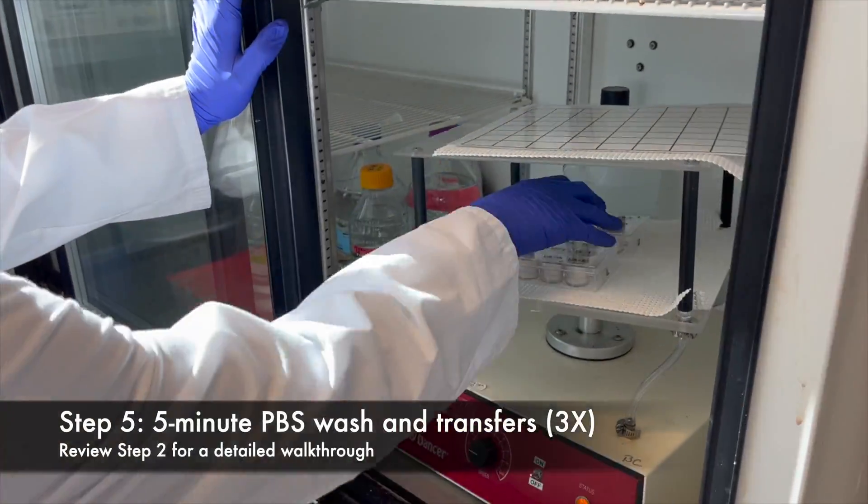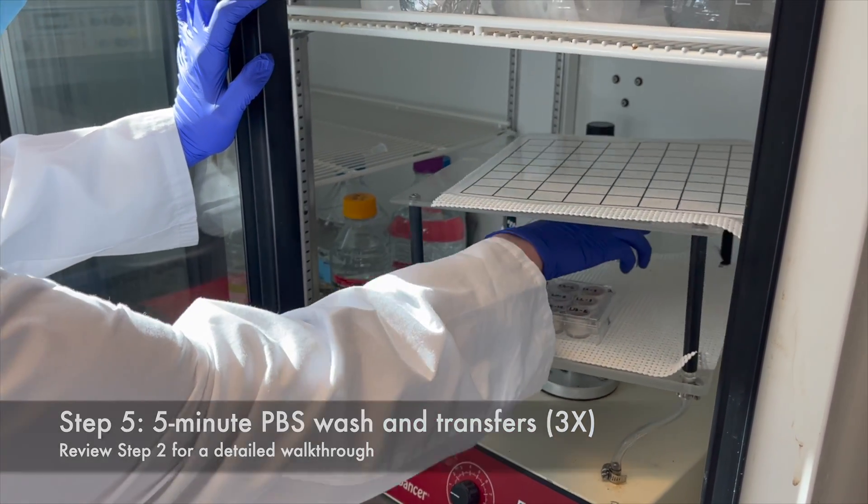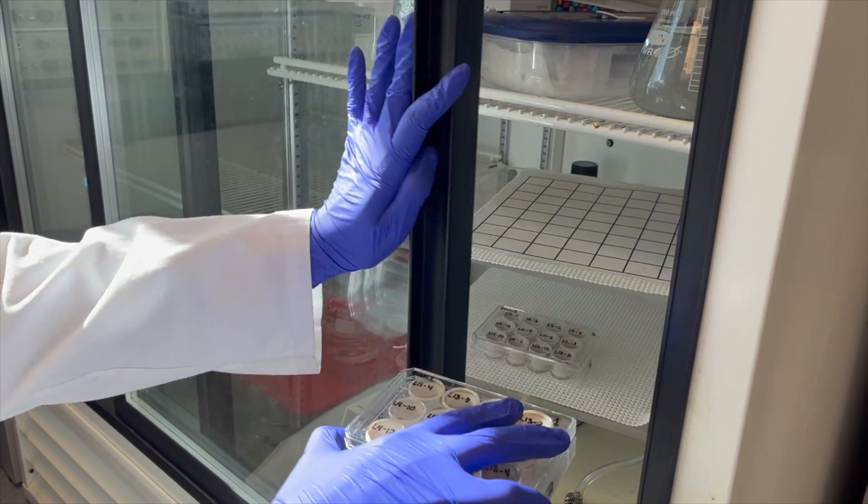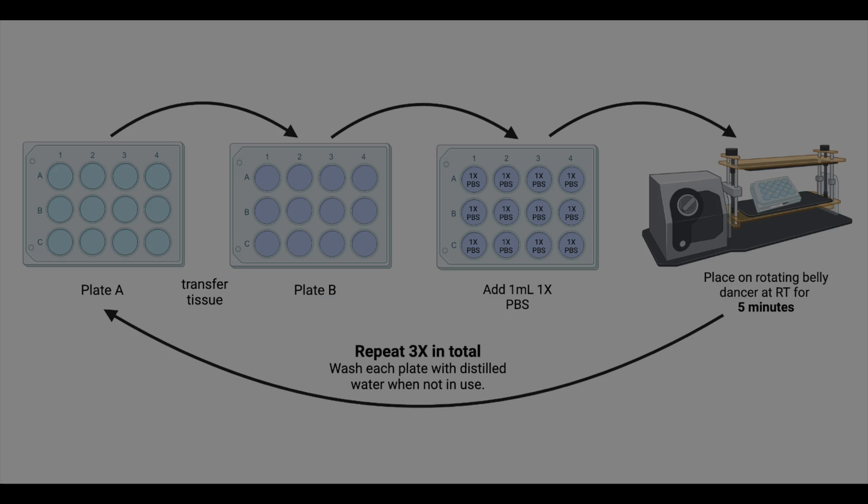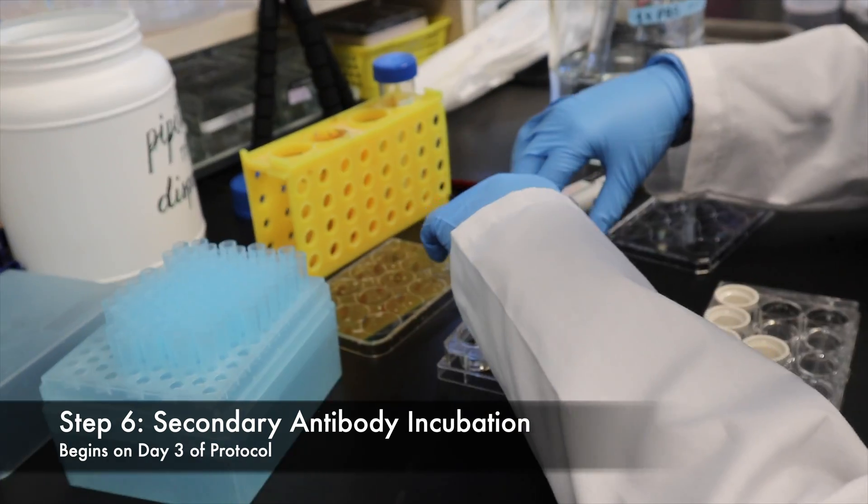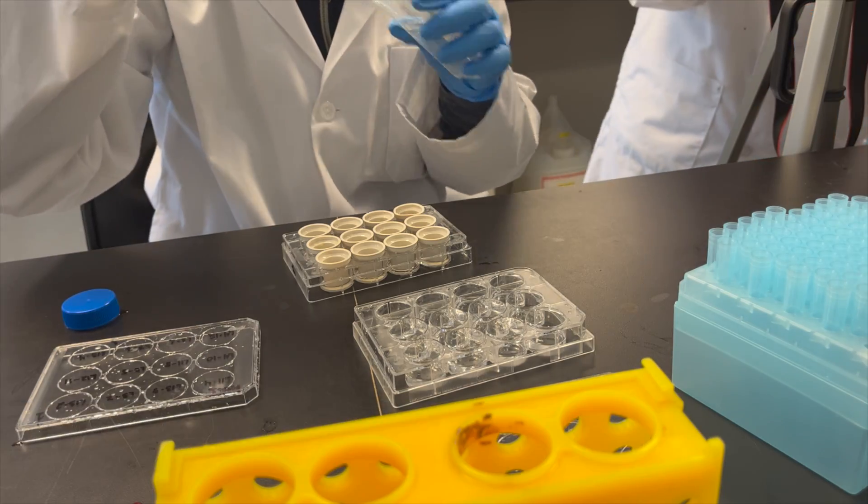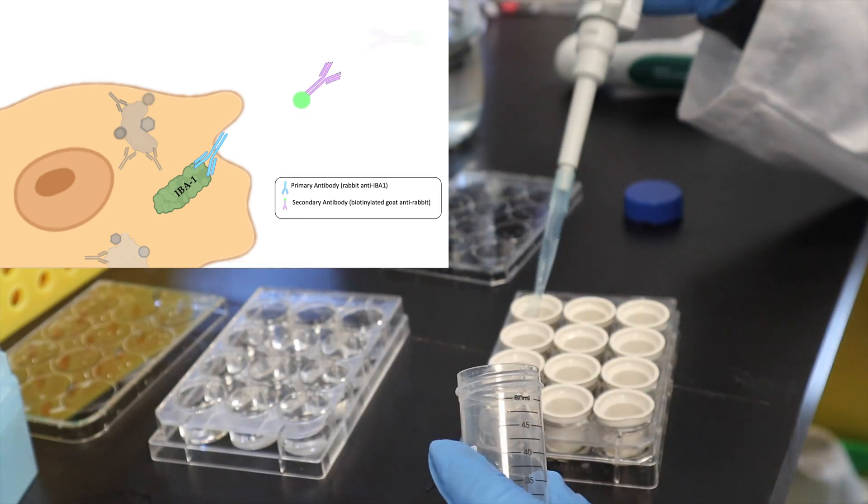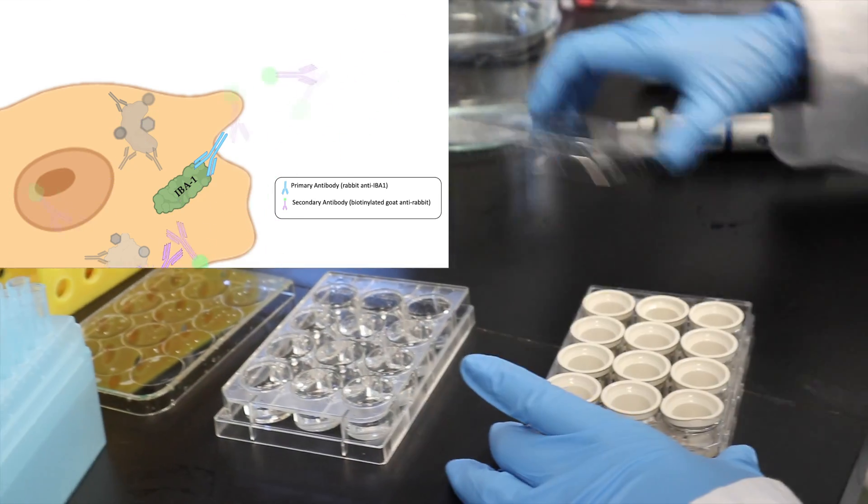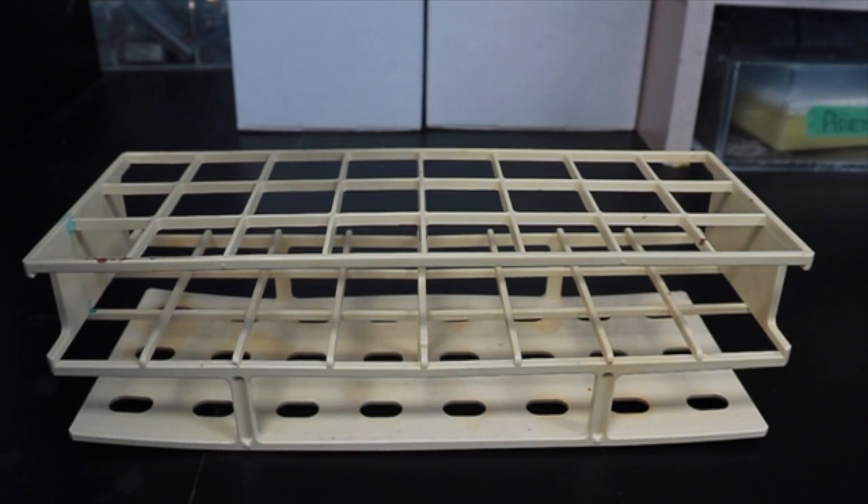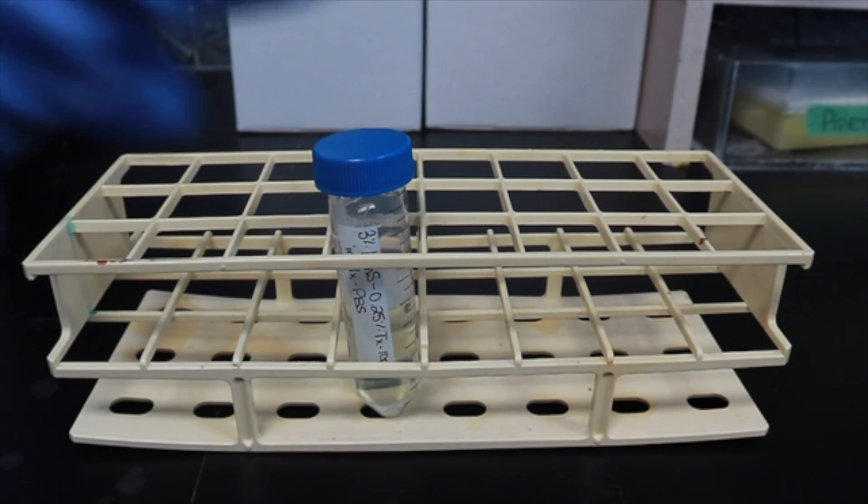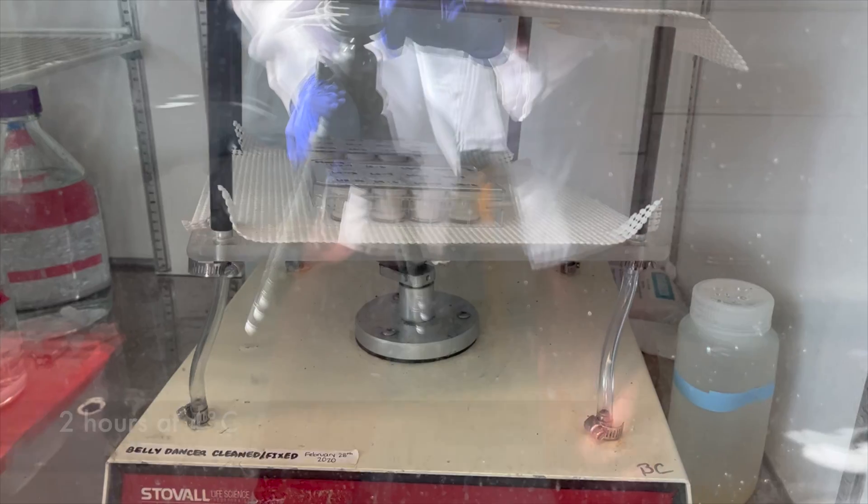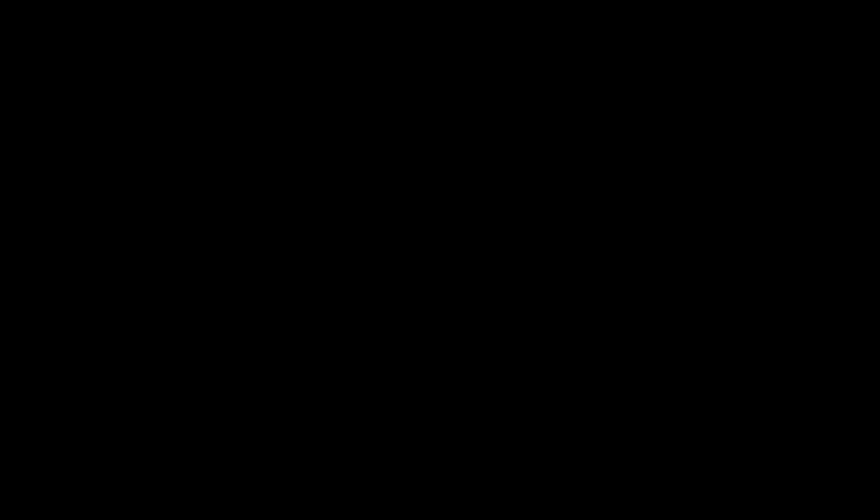To kickstart day 3 of protocol, retrieve your tissue from its primary incubation and perform 3 more 5-minute PBS wash steps as detailed in step 2 of this video or as summarized above. After completing the PBS washes, transfer tissue to a new plate and add approximately 1 milliliter of secondary antibody solution to each well. To make the secondary solution, you will need to perform a 1 in 500 dilution of biotinylated goat anti-rabbit secondary antibody in the previously made blocking buffer solution. Once treated, the samples can be incubated at 4 degrees Celsius for 2 hours.